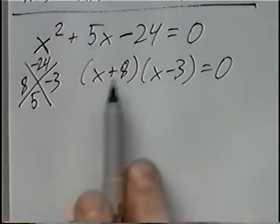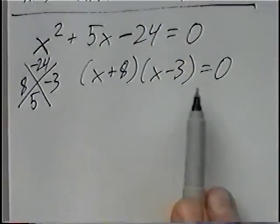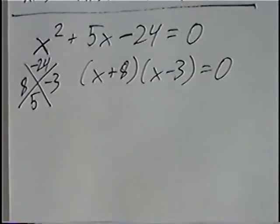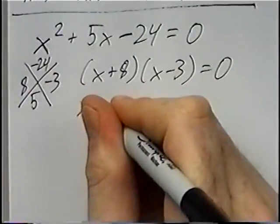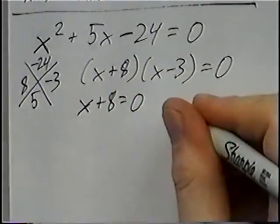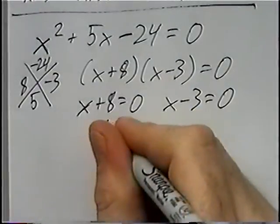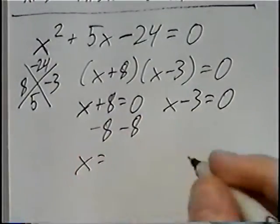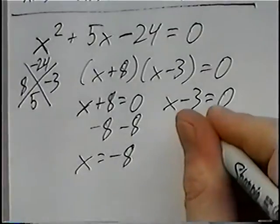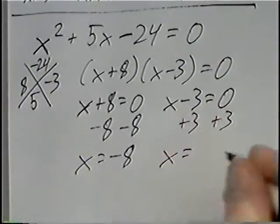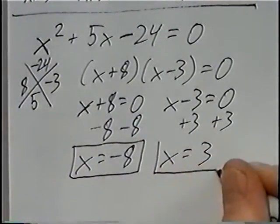After we factor, we can solve this equation. We have two parentheses multiplied together that equal 0, so by the zero product property, one or both of them has to equal 0. So x plus 8 equals 0, and x minus 3 could also equal 0. Solving the first equation by subtracting 8 on both sides gives x equals negative 8. Adding 3 on both sides of the second gives x equals 3. So the two answers are x equals negative 8 and x equals 3.